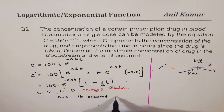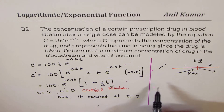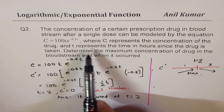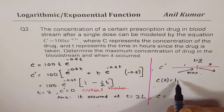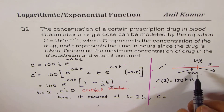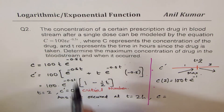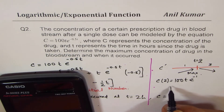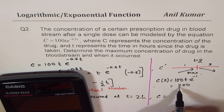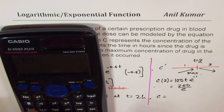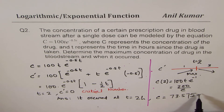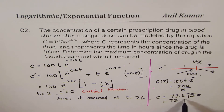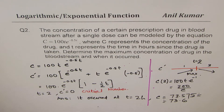The maximum concentration occurs at t = 2 hours. To find the maximum concentration, substitute t = 2 into the equation: C = 100·(2)·e^(−0.5·2) = 200·e^(−1) = 200/e ≈ 73.6. So the maximum concentration is approximately 73.6 (in the appropriate units) and occurs 2 hours after the drug is taken. Remember to include units in such questions.